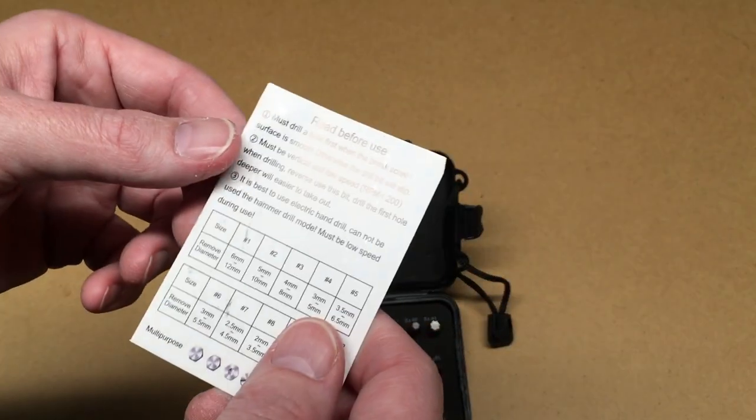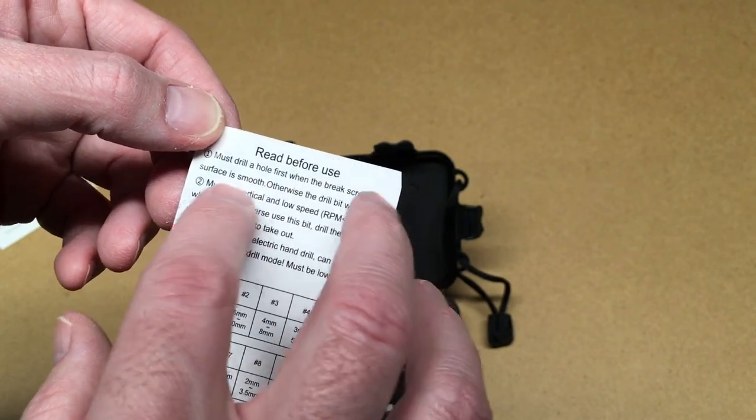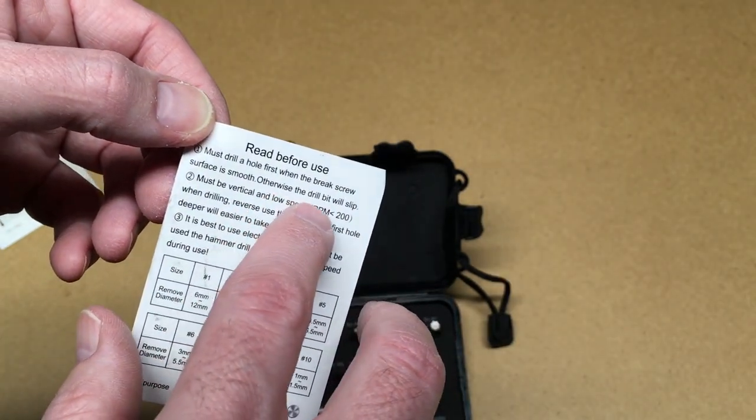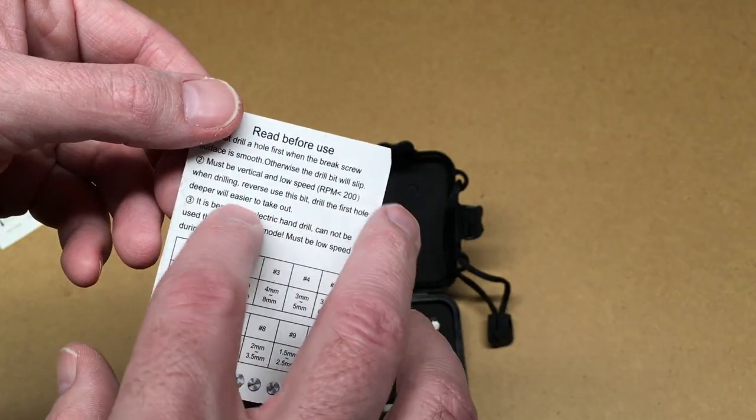Here are the instructions. It says you must drill a hole first when the broken screw surface is smooth, otherwise the drill bit will slip. Must be vertical and low speed, less than 200 RPM when drilling.